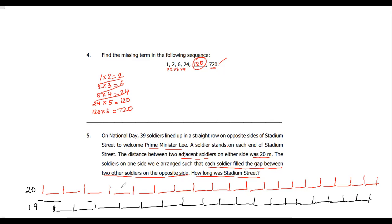The distance between adjacent soldiers was 20 meters. If there were 20 soldiers on one side, there are 19 gaps between them. So the total distance is 19 gaps times 20 meters, which equals 380 meters. How long was Stadium Street? It was 380 meters.